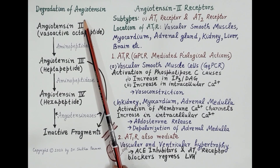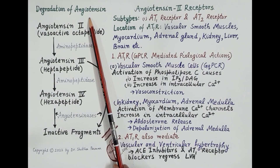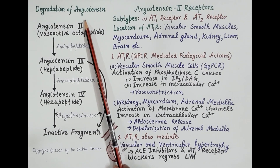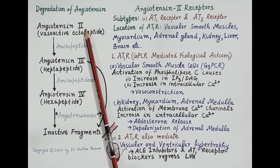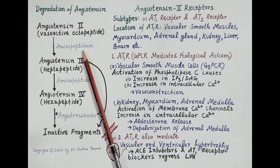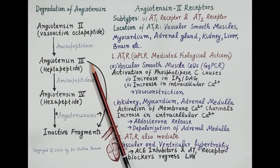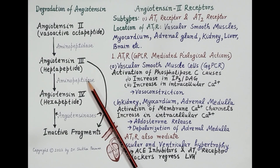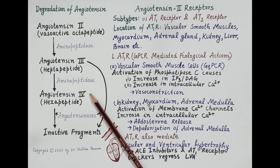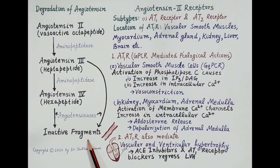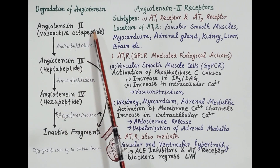Angiotensin 2 has a short half-life of about one minute. The enzyme aminopeptidase degrades angiotensin 2 to angiotensin 3, and then further to angiotensin 4. Angiotensin 3 and angiotensin 4 are subsequently degraded to inactive fragments by angiotensinase enzymes.